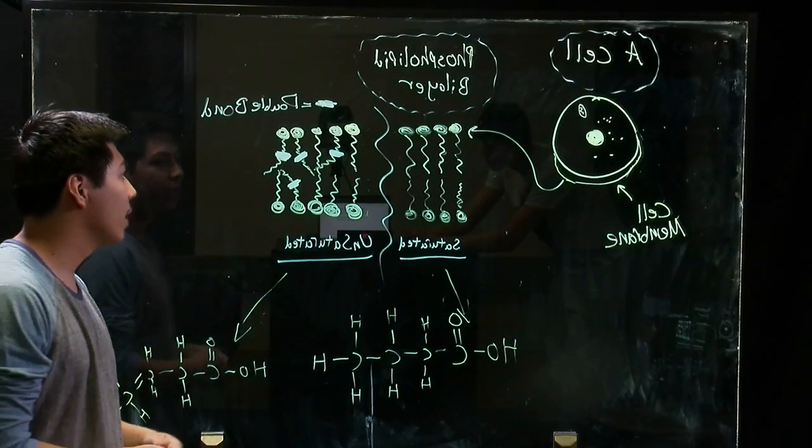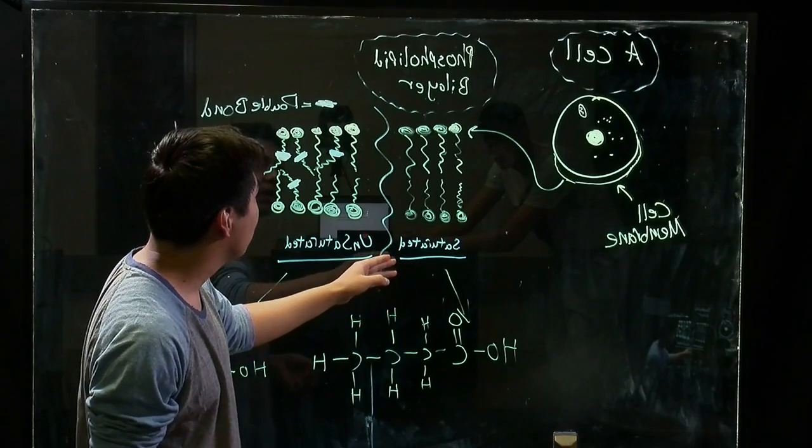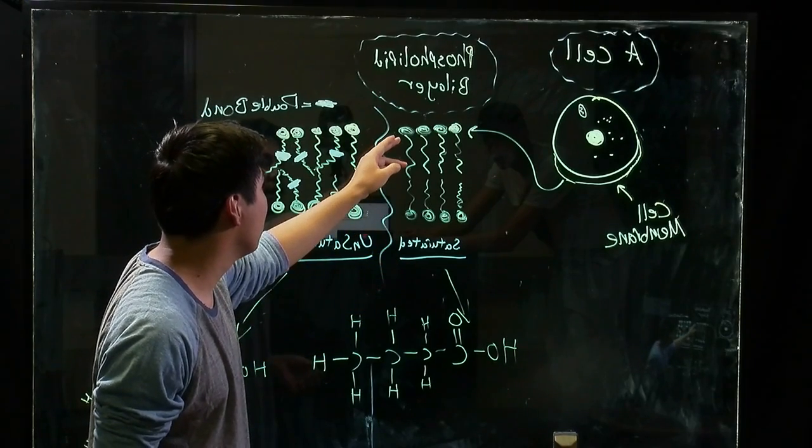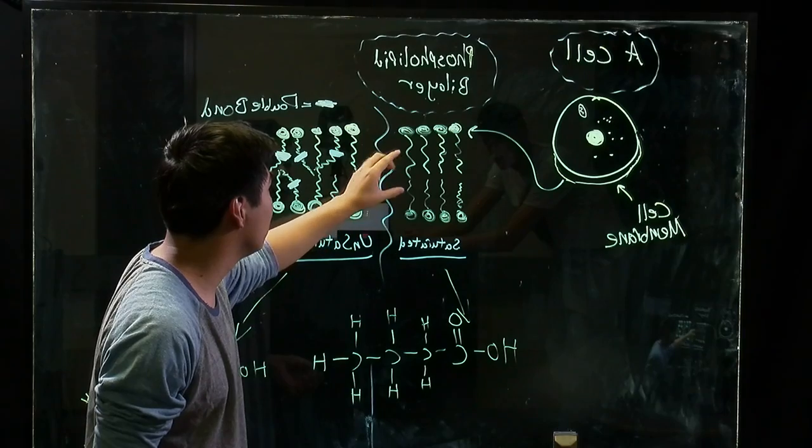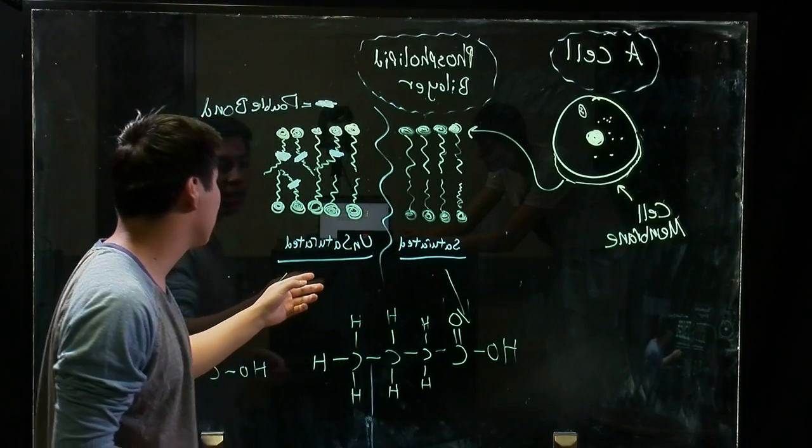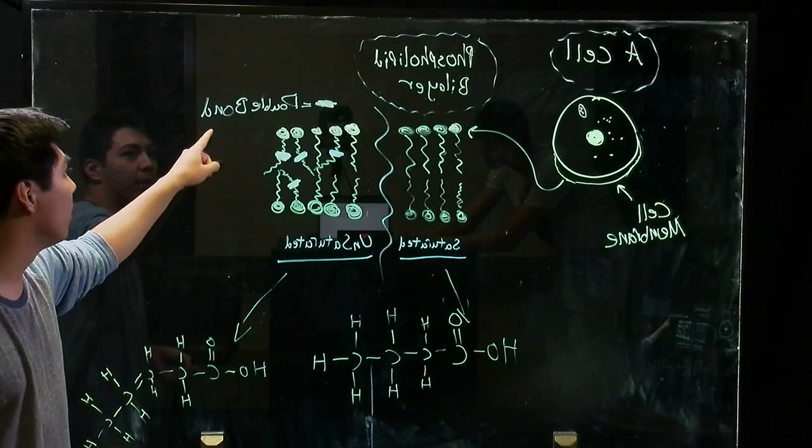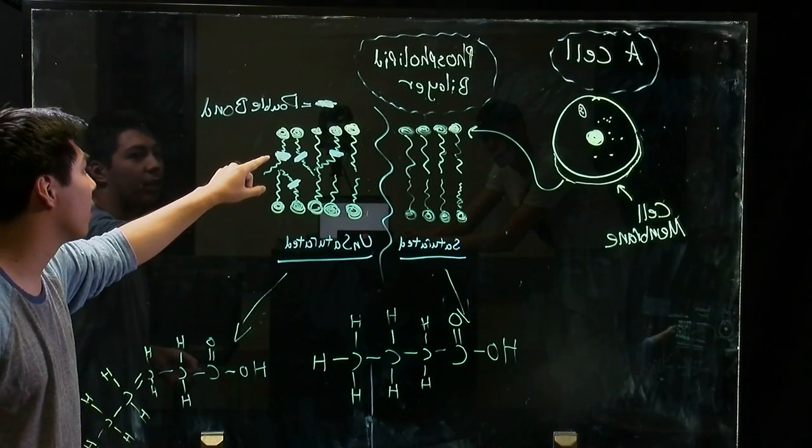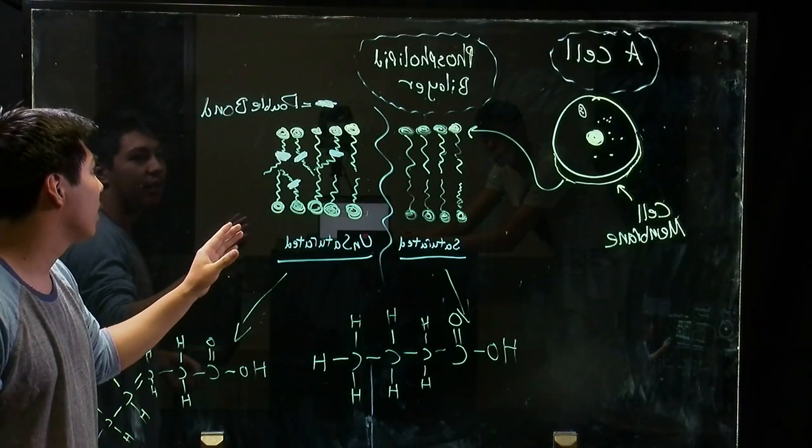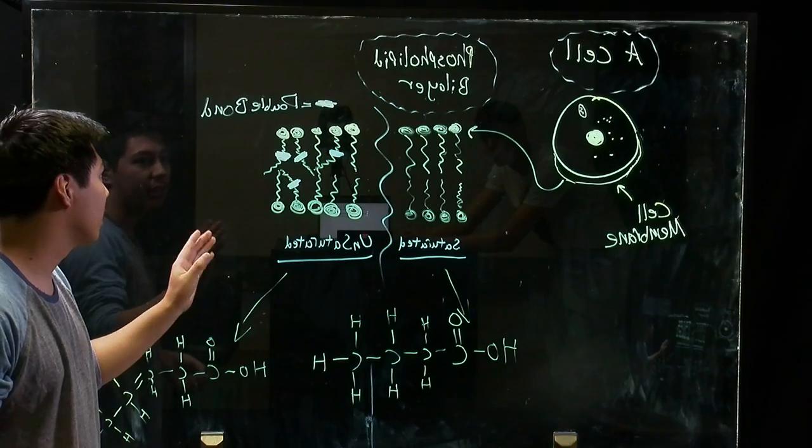We can see here that the saturated fatty acids have single bonds, so the tails are straight. In the unsaturated version, they have double bonds—we can point them out here with carbon—and so they're more crooked and kinked.